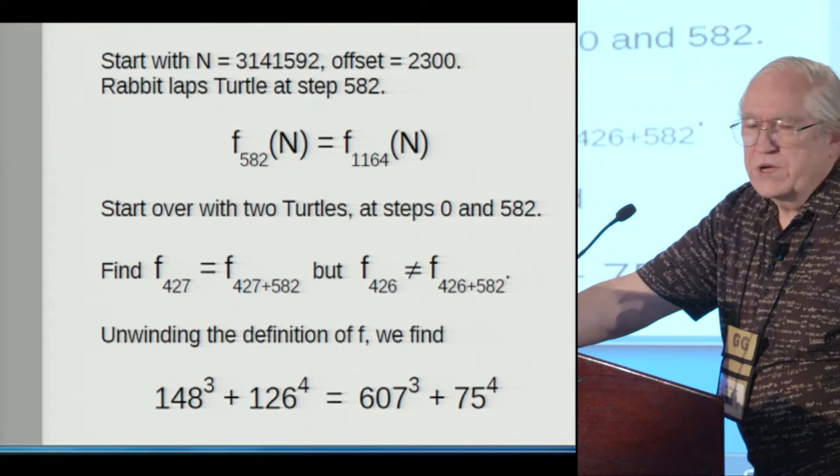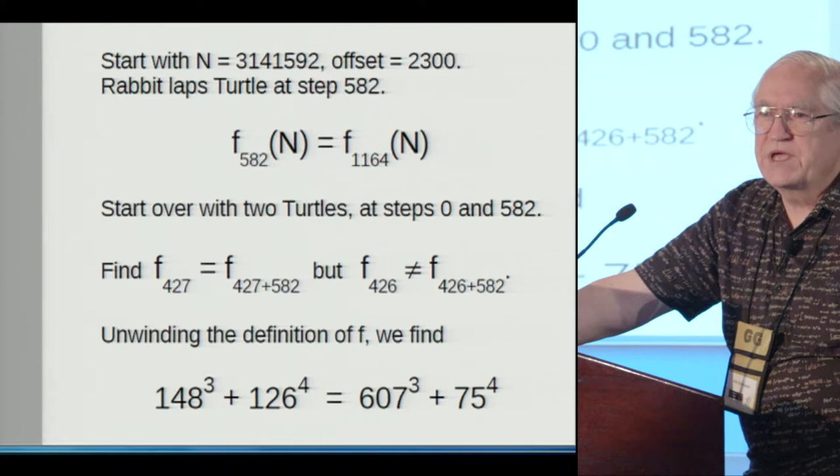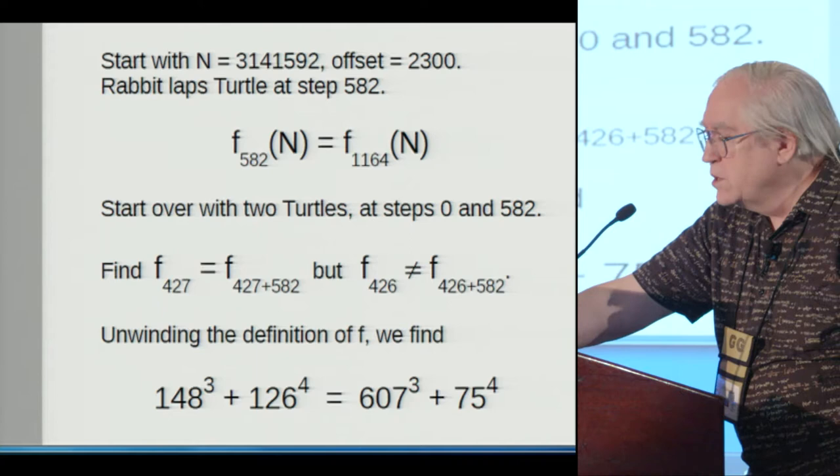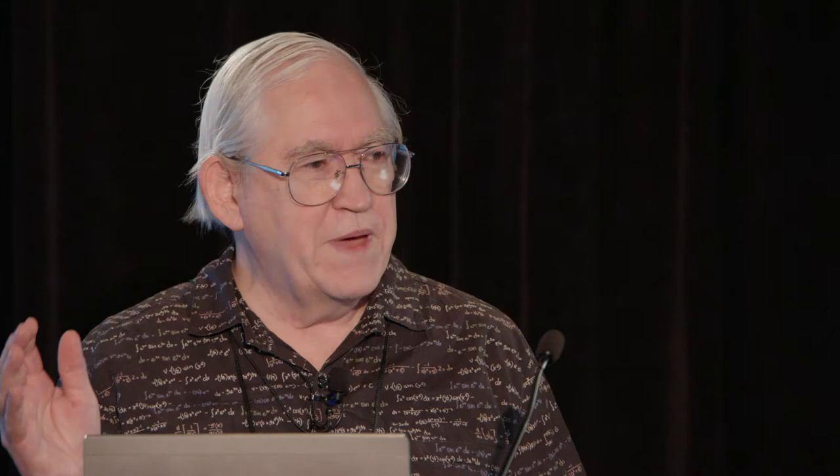Now we start over with two turtles, but one of them has a head start of 582 steps, which may or may not put him in the loop, we don't need to know. We then run that forward in comparing weighting until we get a match on values. And that happens after 427 steps, so 427 Fs is the same as that plus 582 more. However, we back up one, and we have that 426 is not the same as 426 plus 582.